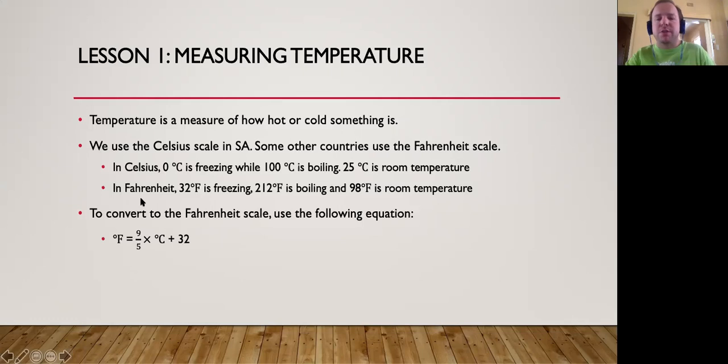Now to be able to convert to Fahrenheit from Celsius we're going to use this formula. Degrees Fahrenheit is equal to 9 over 5 times degrees Celsius plus 32. To convert from Celsius to Fahrenheit, we're going to take the degree Celsius, substitute it into the equation, and work out our degrees Fahrenheit.